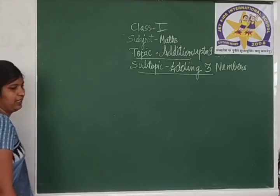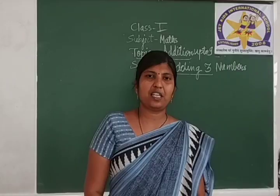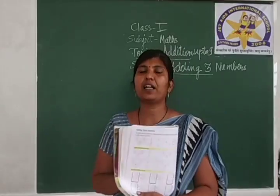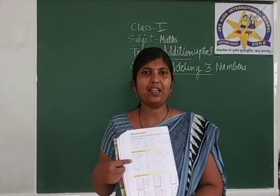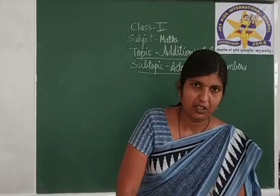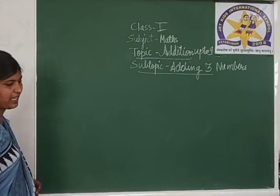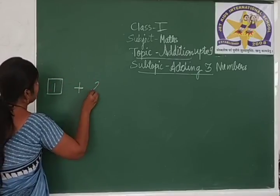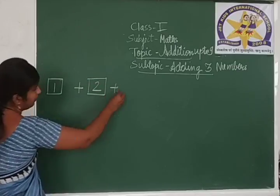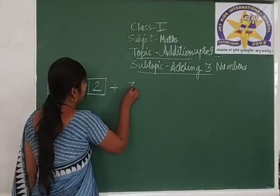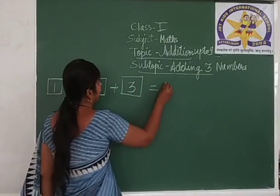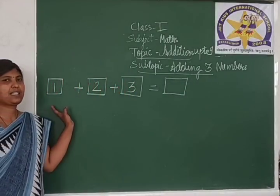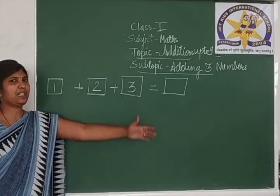Students, this next example we are going to see from your textbook. Open textbook page number 34. One exercise is given here — Add the following. We will do the first example: 1 plus 2 plus 3. The answer we are going to write in the empty box. Here are 3 digits: 1, 2 and 3. So, 1 plus 2 plus 3.